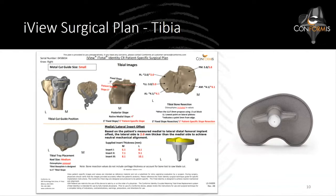The bottom line here is all of the guides that have key cuts on them — the distal femoral cutting guide and the proximal tibia cutting guide — now come with an optional metal cutting guide, which is captured. This has answered a lot of concerns from our surgeons. This is identified on the iTotal. This is a pretty straightforward case. There's nothing about the identity that changes the customized patient-specific components.